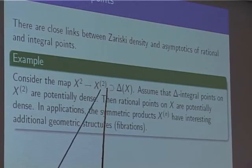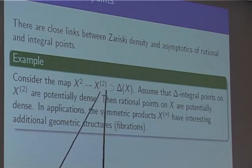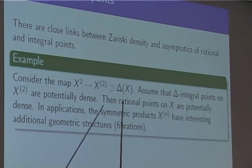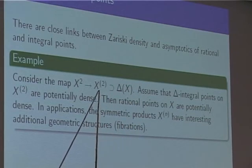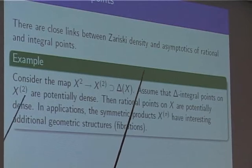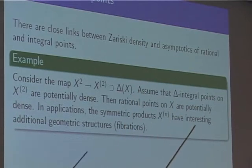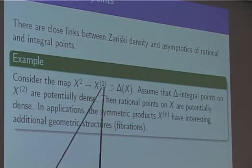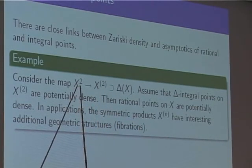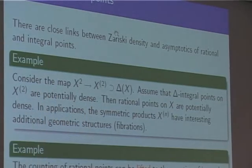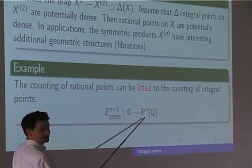There is a map from the product to the symmetric square, where branching is along the diagonal. If we knew that delta-integral points in the symmetric product were Zariski dense, we would get density of rational points on X² and then on X. Here we see a relation between density of integral points and rational points — a trick which has not yet worked, but the relation is real.